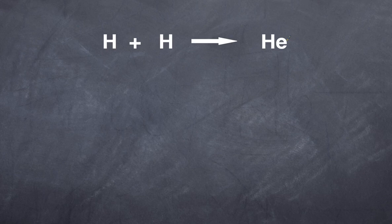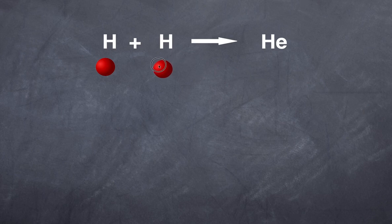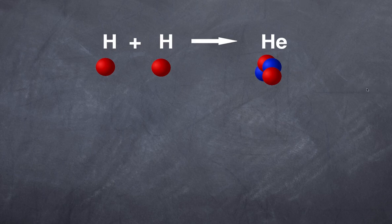Here is a simple equation: two hydrogens convert to helium. Hydrogen has an atomic number of one, meaning it is made up of one proton. Helium has atomic number two — two protons — but it's more complex than that because a helium nucleus is actually made up of two protons as well as two neutrons. So how do two protons convert to four nucleons? This involves a process called the proton-proton chain.